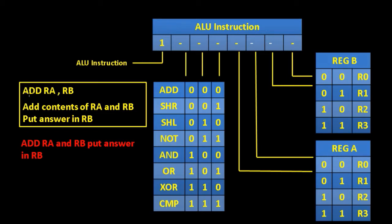For example, ADD RA, RB is given by 1, 0, 0, 0 and then we'd have a choice for RA and RB — so it could be 00 for R0 and 01 for R1. We need a simple way of converting this assembly language into the ones and zeros of machine code, and that's what our assembler is going to do.